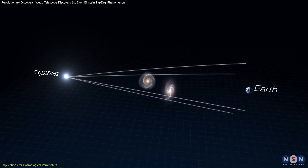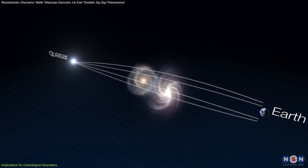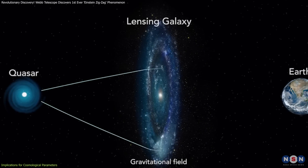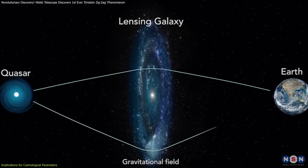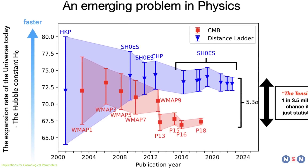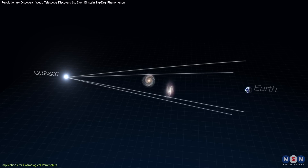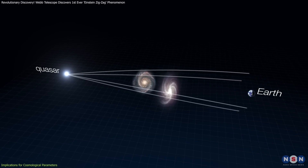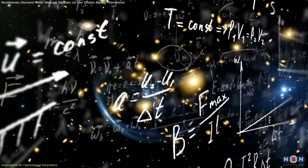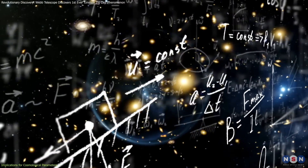This unique lensing system provides a groundbreaking method to refine these measurements. By analyzing the time delays between the six images of the quasar, created by the light's varying paths around the two lensing galaxies, researchers can determine the Hubble constant with exceptional precision. The involvement of two lensing galaxies, rather than one, further strengthens the reliability of the calculations by offering a better constrained lensing model and reducing uncertainties.